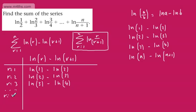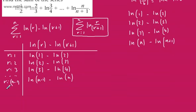We'll now look at when R is equal to N minus 1, the penultimate term. We'll have LN of N minus 1, minus LN of N minus 1 plus 1, which is LN of N. And then the final term when R equals N: we'll have the natural log of N minus the natural log of N plus 1.